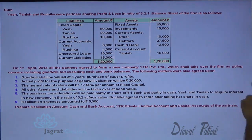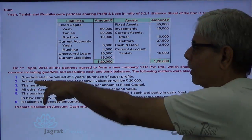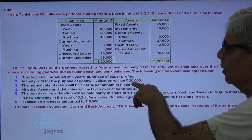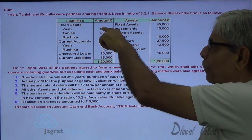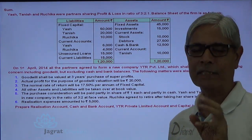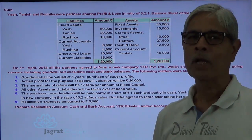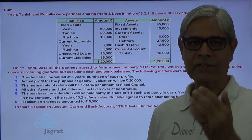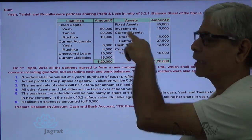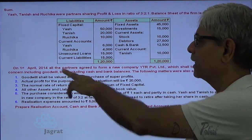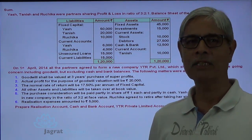The following matters were agreed upon. Goodwill shall be valued at 3 years' purchase of super profit. Actual profit for the purpose of goodwill valuation will be 20,000. Normal rate of return is 17.5% of the fixed capital — that is 50,000 plus 20,000 plus 10,000, totalling 80,000 into 17.5%, which works out to 14,000. Super profit, the profit exceeding the normal rate of return, is 6,000. Super profit multiplied by 3 gives the goodwill value of 18,000.